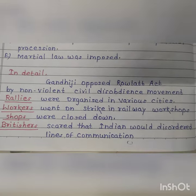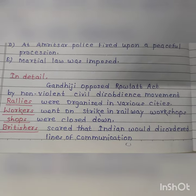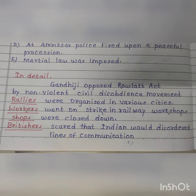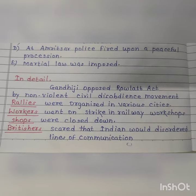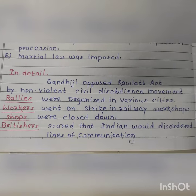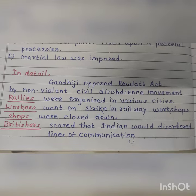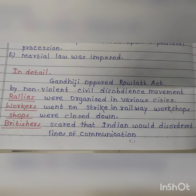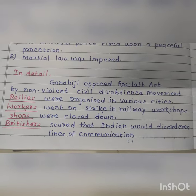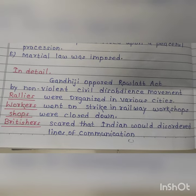In detail, Gandhiji opposed the Rowlatt Act through a nonviolent civil disobedience movement. Rallies were organized in various cities. Workers went on strike in railway workshops. Shops were closed down.